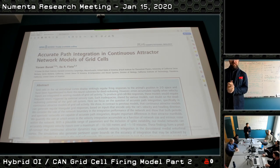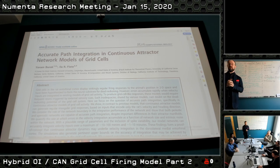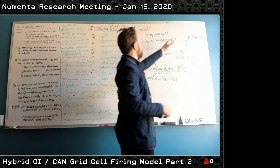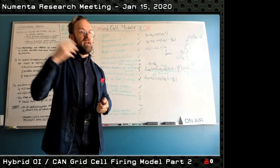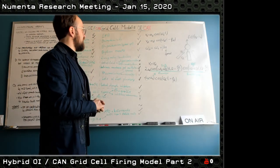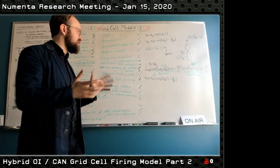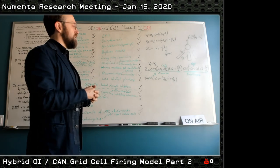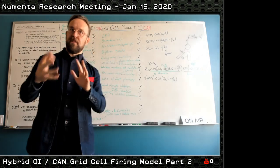This is part two of the series about the hybrid model of grid cells. Last time we were talking about an oscillatory interference model — combining intrinsic membrane oscillation with dendritic oscillators that are essentially velocity-controlled oscillations in a specific direction. One could think of them as speed-attenuated head direction cells fluctuating at theta, and that kind of model can very nicely explain a lot of the important byproducts of building this grid.